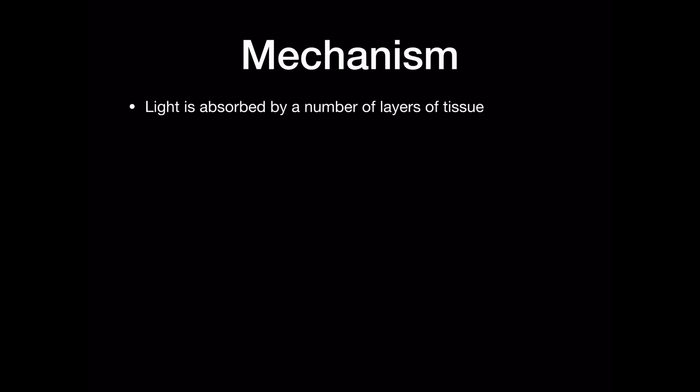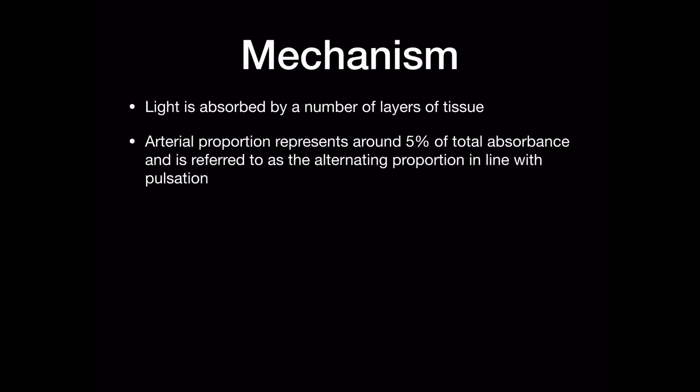Light is absorbed by a number of layers of tissue. The arterial proportion represents around 5% of total absorbance and is referred to as the alternating proportion in line with pulsation. The photodetector is able to generate a voltage dependent on the amount of light it receives.